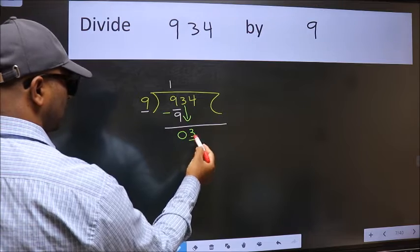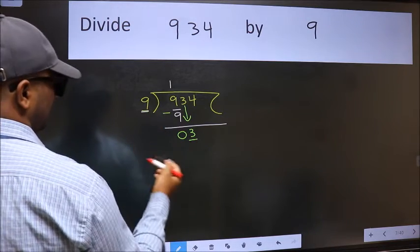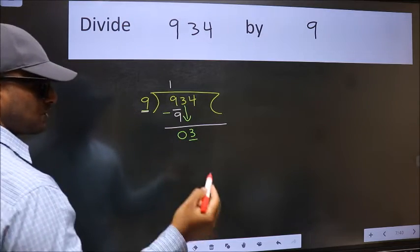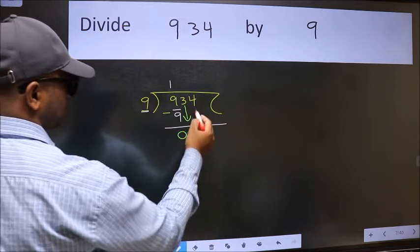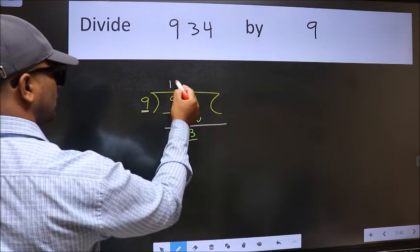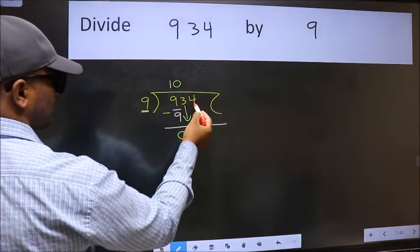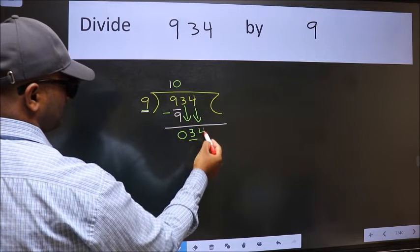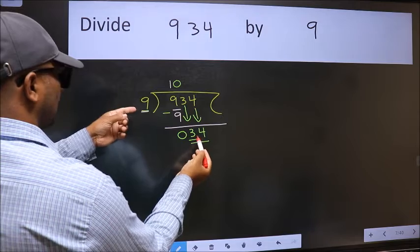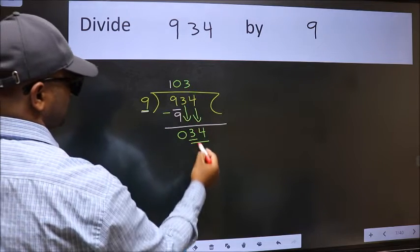Down. Now here we have three and here nine. Three is smaller than nine, so we should bring down the second number. The rule to bring down the second number is we should put zero here, then only we can bring this number down. Now 34. A number close to 34 in the nine table is nine threes, 27.